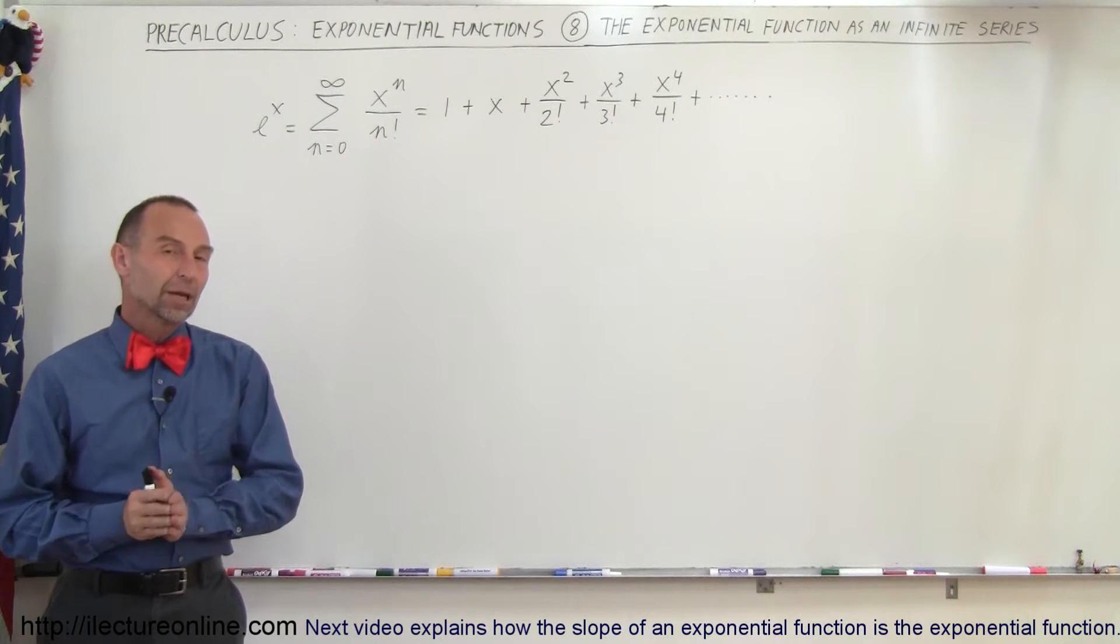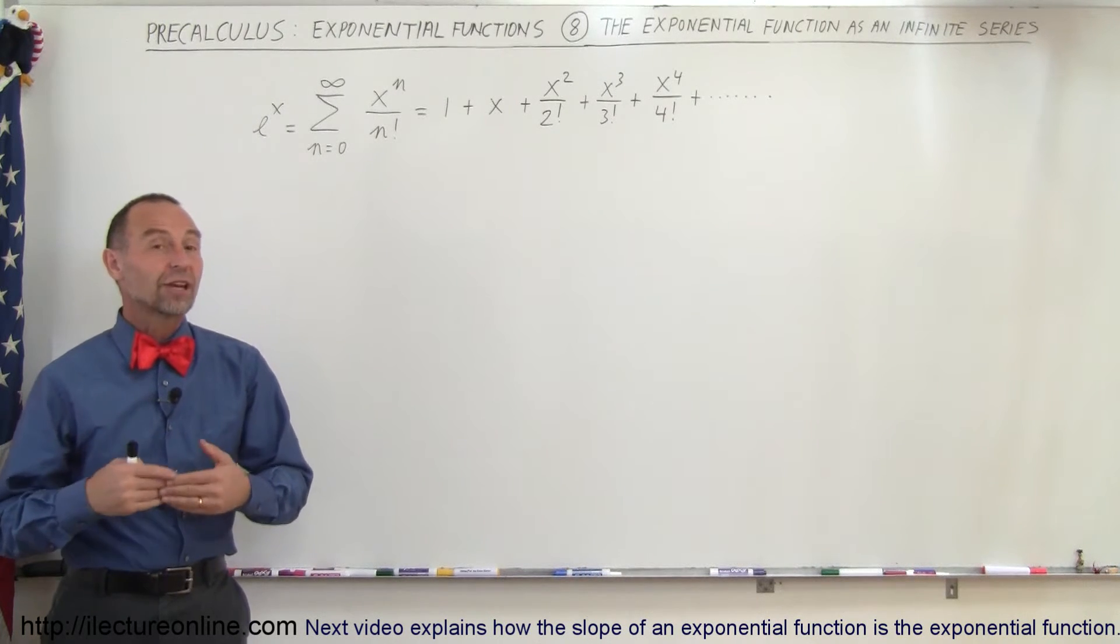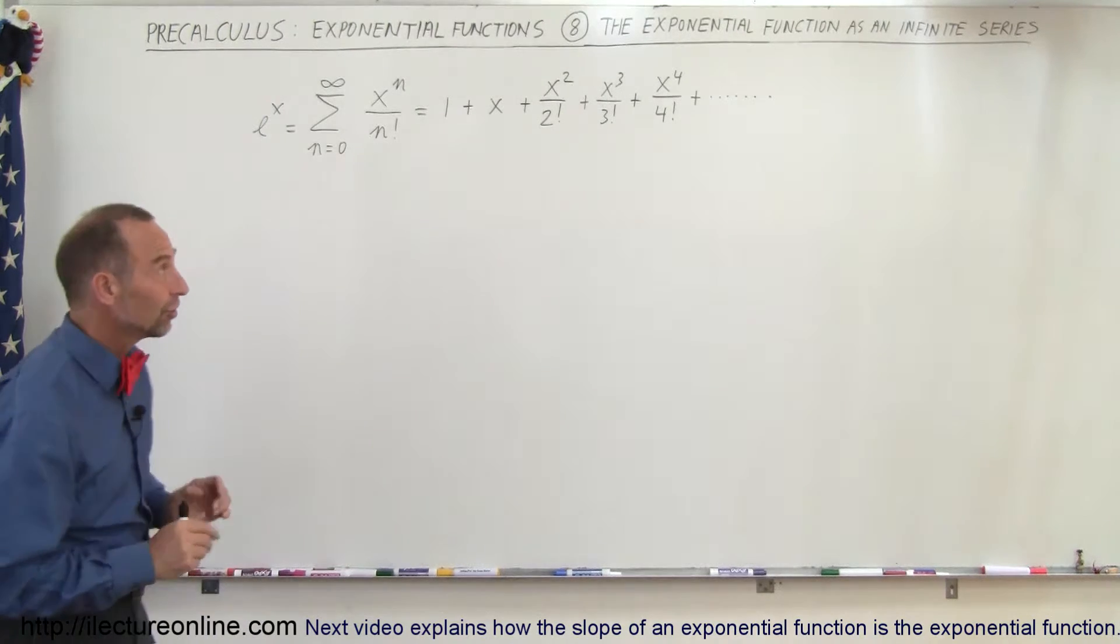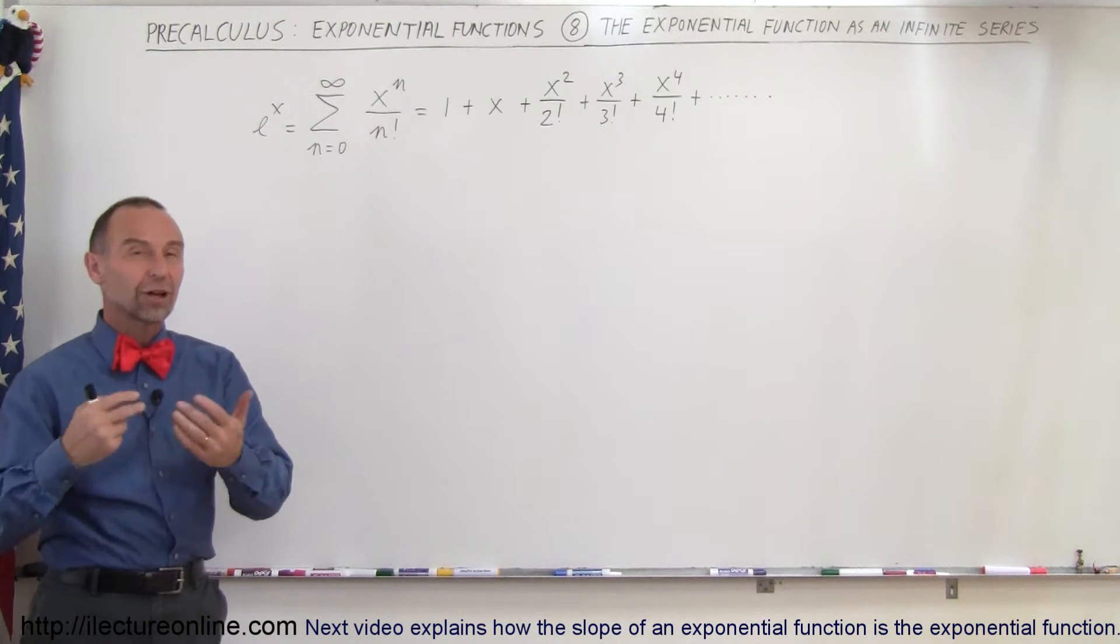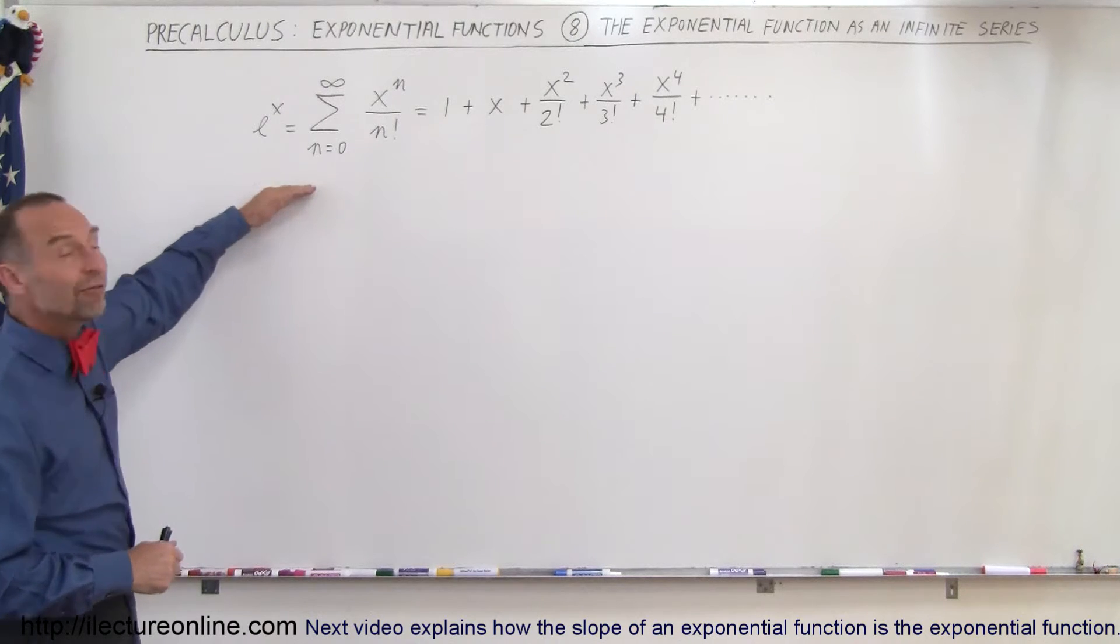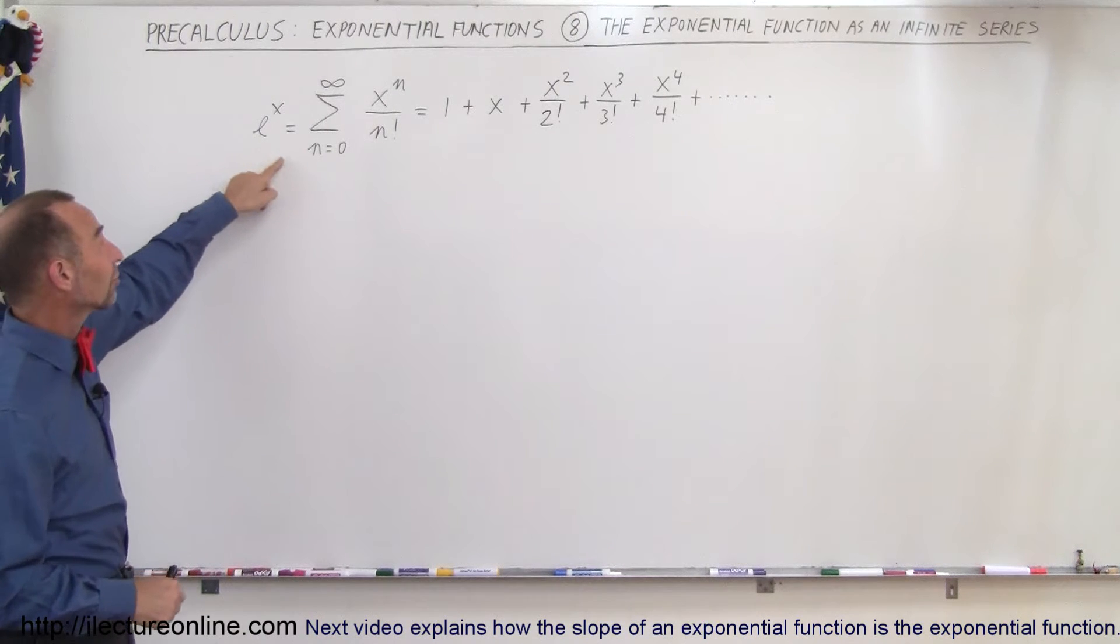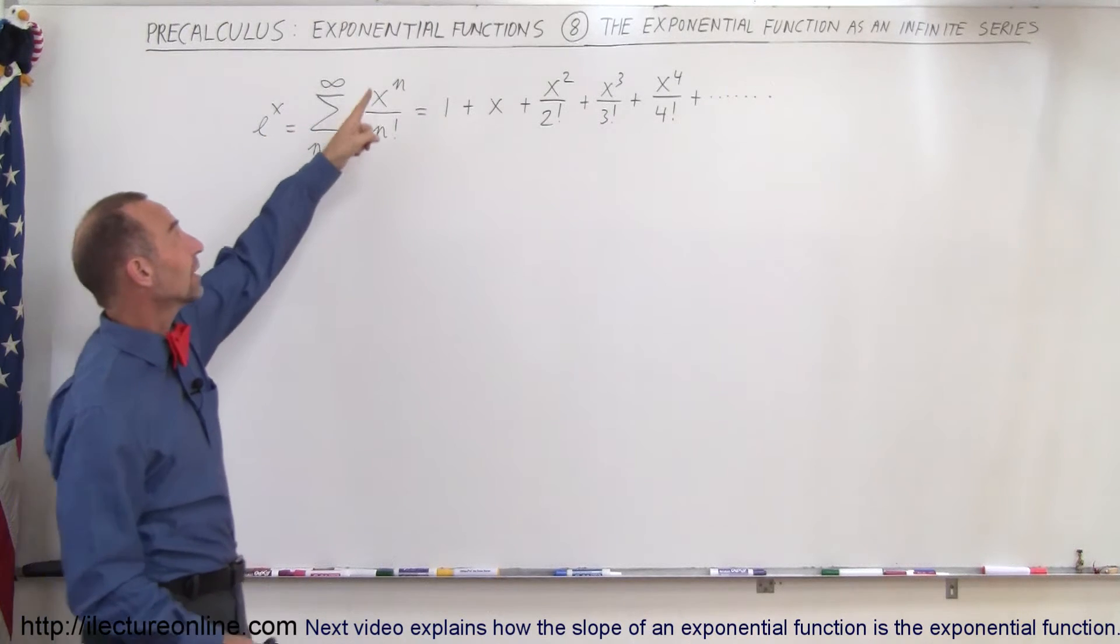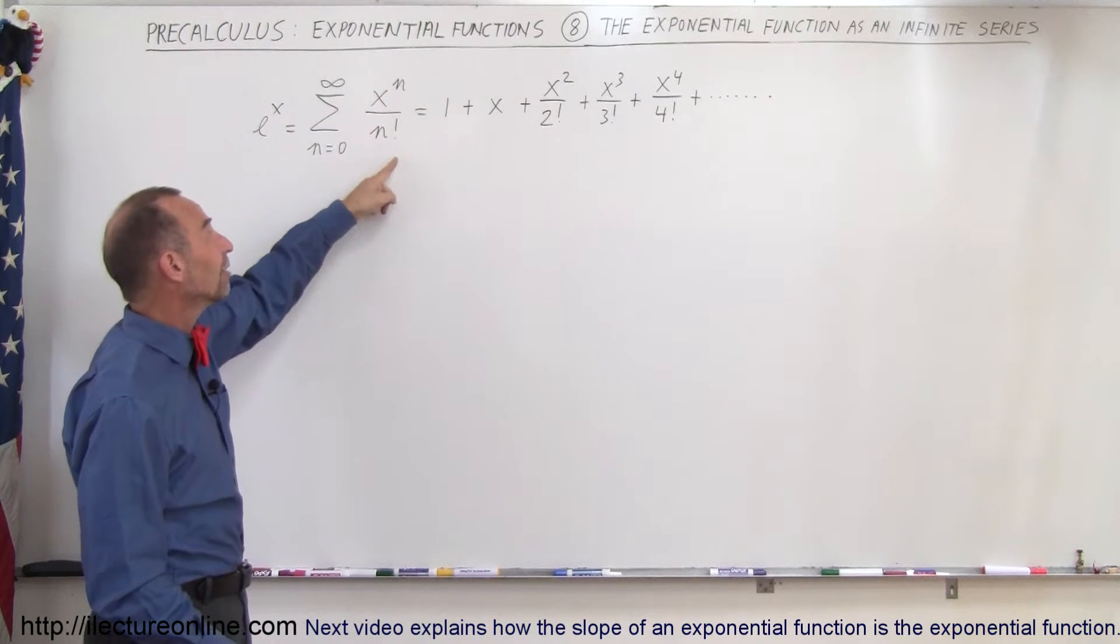Welcome to our lecture online. Another way in which we can express the exponential function, and we mean the natural exponential function with base e, is as an infinite series. We can write that e to the x can be written as the sum from n equals 0 to infinity of x to the n divided by n factorial.